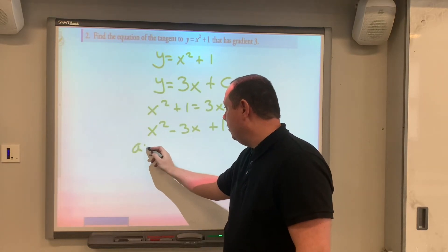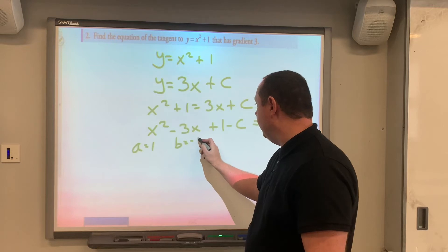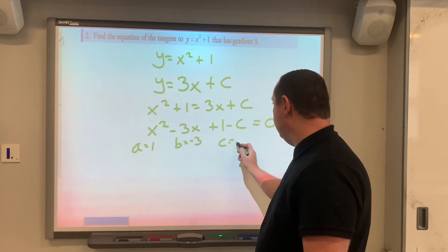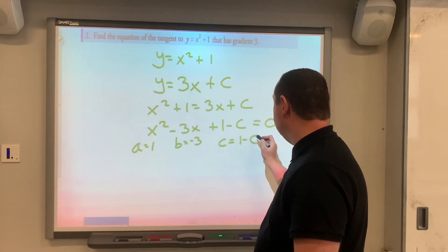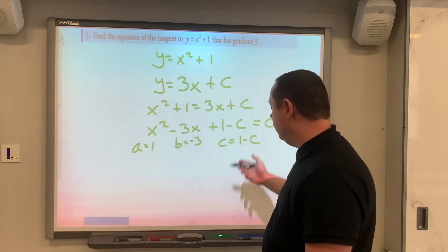So a equals 1, b equals minus 3, and c equals 1 minus c. But that's fine.